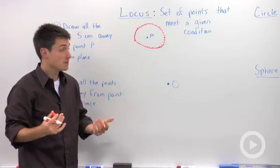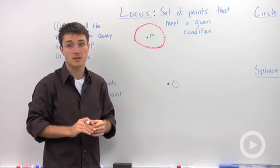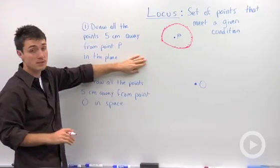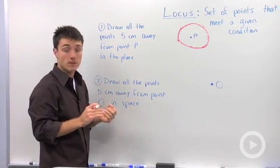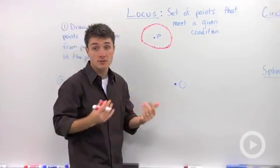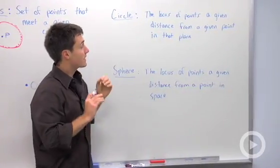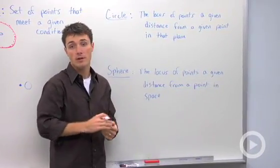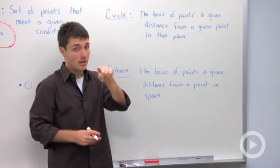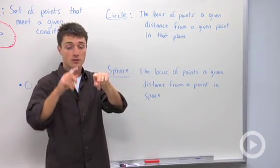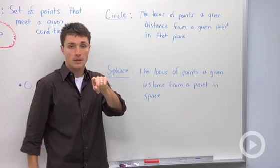So a locus is all of these points that meet a specific condition — in this case, five centimeters away from point P in that plane — which leads us to our definition of a circle, which is the locus of points at a given distance away from a given point in a plane. So it's kind of a long way of saying, if I give you a point, a circle by definition is all of those points that are a certain distance away from that point.